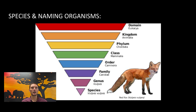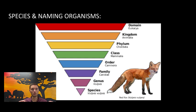Carl Linnaeus developed what we now know as binomial nomenclature, in which species have two specific names. Species are divided through a categorizing system with the most broad being the domain, then becoming more and more specific — domain, kingdom, phylum, class, order, family, genus, and then species. As we move down that list, the similarities between species within those groups become more and more specific.